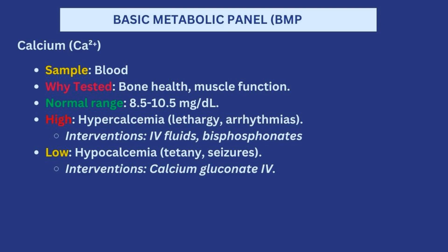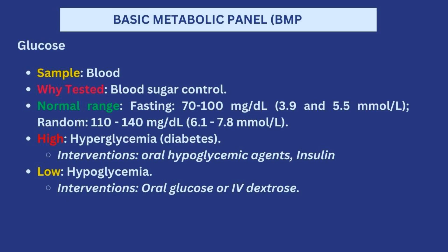Next, let's talk about calcium levels, which point to bone health and muscle function. Normally it should be between 8.5 to 10.5 milligrams per deciliter. When it is high, the patient is suffering from hypercalcemia and could be experiencing lethargy and arrhythmias — in that situation you may want to give IV fluids as well as bisphosphonates. If calcium levels are low, the patient is suffering from hypocalcemia and could have tetany or even seizures. In that situation you may want to give calcium gluconate IV.